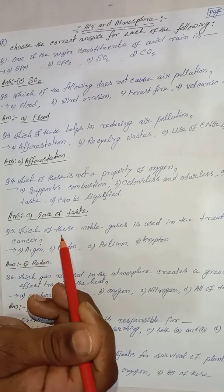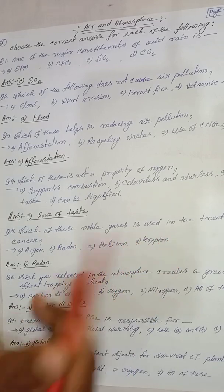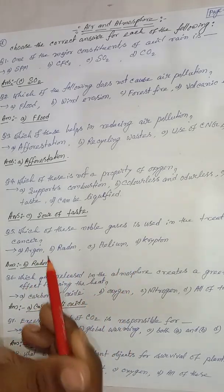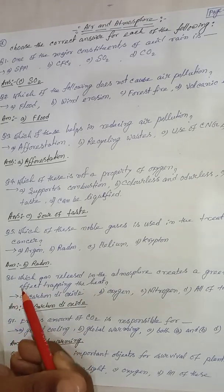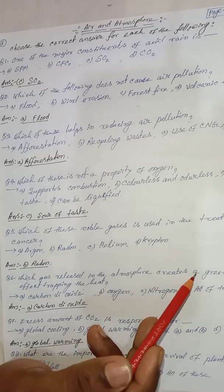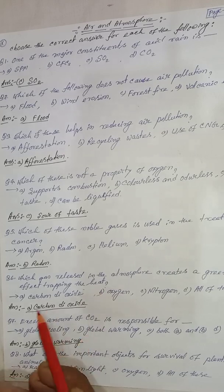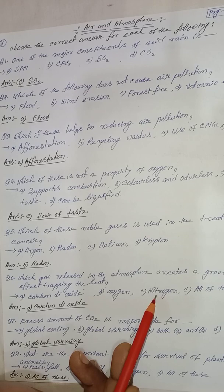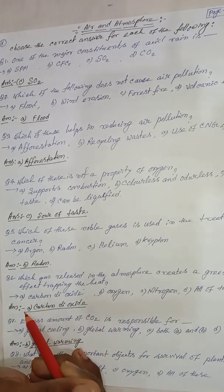Next question: which of these noble gases is used in the treatment of cancer? Options: argon, radon, helium, krypton. The correct answer is option B, radon. Next question: which gas released in the atmosphere creates a greenhouse effect, trapping heat? The correct answer is option A, carbon dioxide.